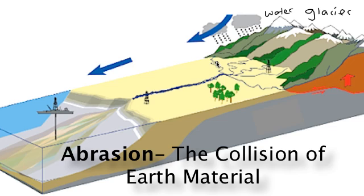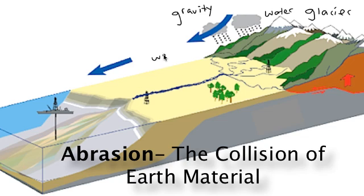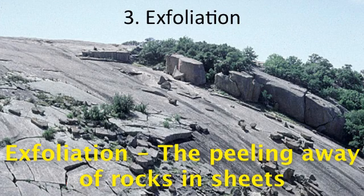Gravity can also cause rocks to roll down the side of a mountain and smash into one another, so gravity is a cause of abrasion. Wind blowing across the land can cause rocks to smash into each other, and rocks falling into the ocean encounter water that causes them to smash up as well. So the main causes of abrasion are wind, water, gravity, and ice like glaciers.